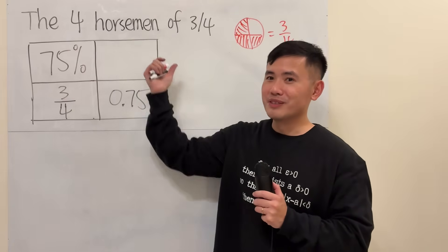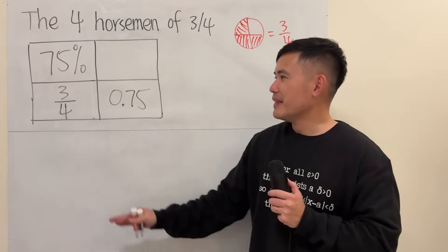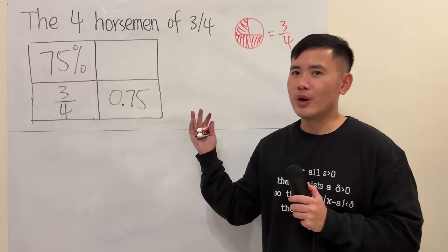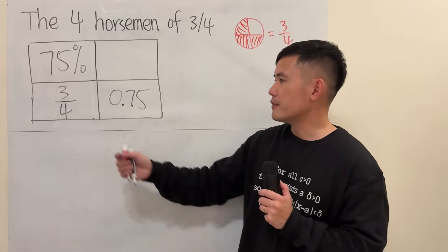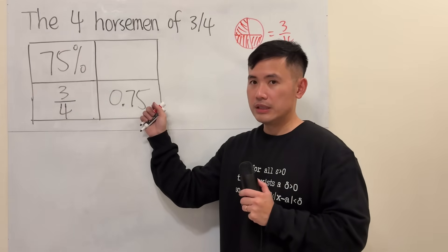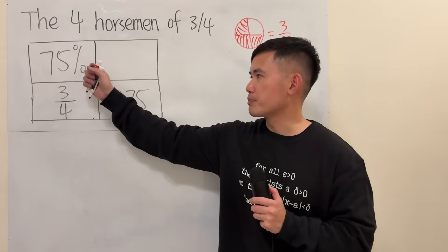So this is the first horseman, the first thing. Now we have, of course, 3 other ways to show 3 over 4. So I want to use this opportunity to kind of review how we can convert a fraction to its decimal and also to percent.